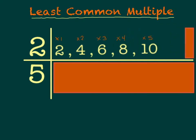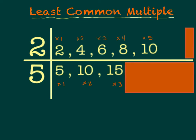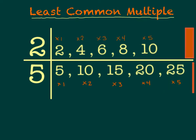It looks a lot like skip counting: 2, 4, 6, 8, 10. Now I'm going to move on to my next number, 5, and do the same thing following in sequence, getting 5, 10, 15, 20, and 25.